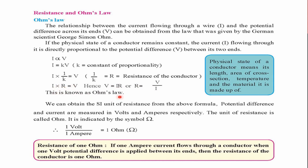The SI unit of resistance is the ohm. One ohm equals one volt divided by one ampere. The definition of one ohm is: if one ampere of current flows through a conductor when one volt of potential difference is applied between its ends, then the resistance of that conductor is one ohm.